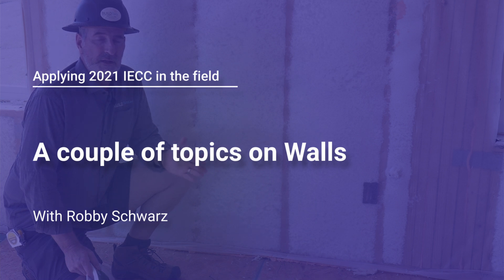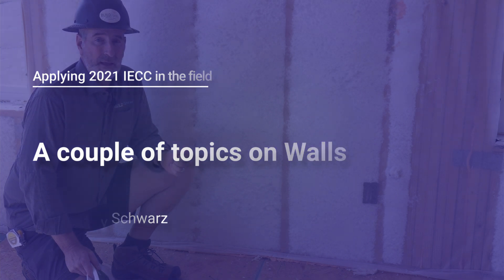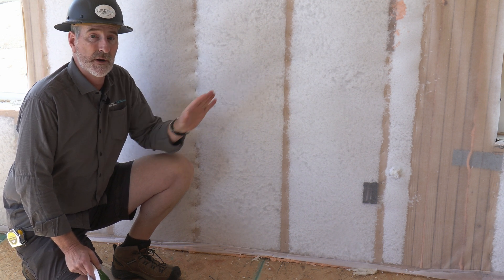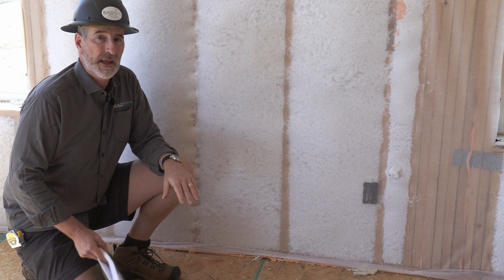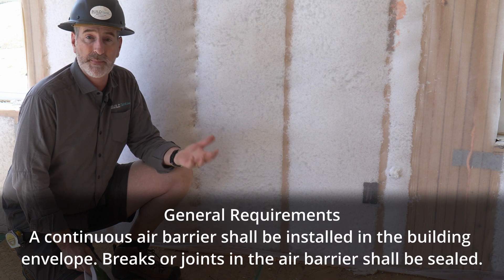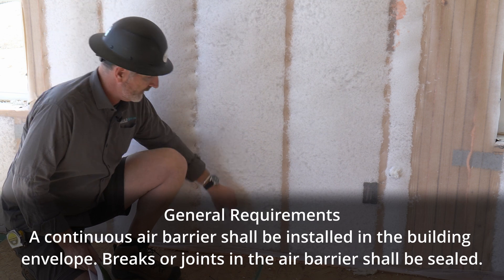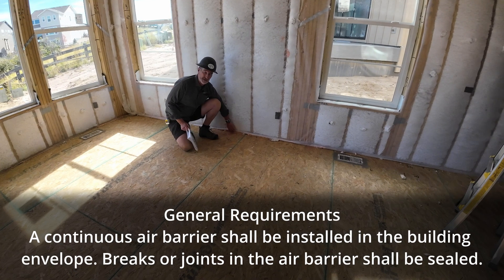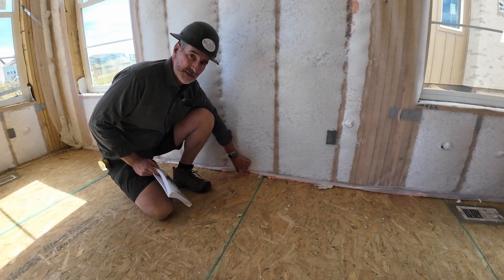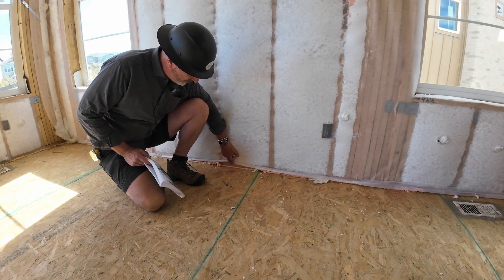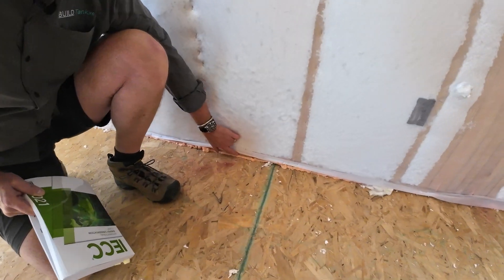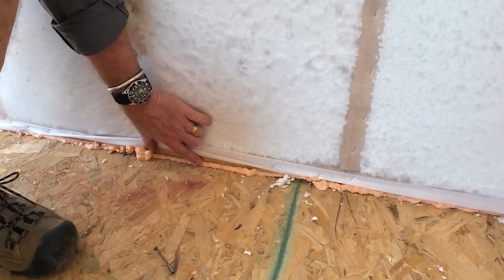The energy code is looking for an airtight house, and the majority of places where we have air leakage is not necessarily in the cavity — it's where building assemblies come together. The energy code says we need to seal all breaks, joints, and penetrations through the building envelope. So in this case, although it's not specifically referenced, this is a break or joint in the building thermal envelope, and sealing the bottom plate to the subfloor — in this case using an expanded foam — is essentially a requirement of the code.